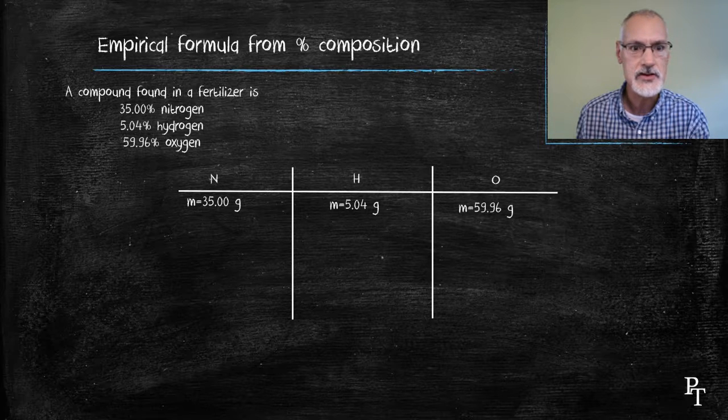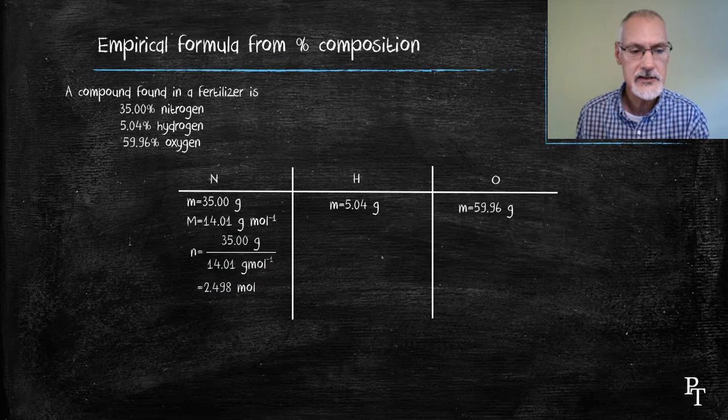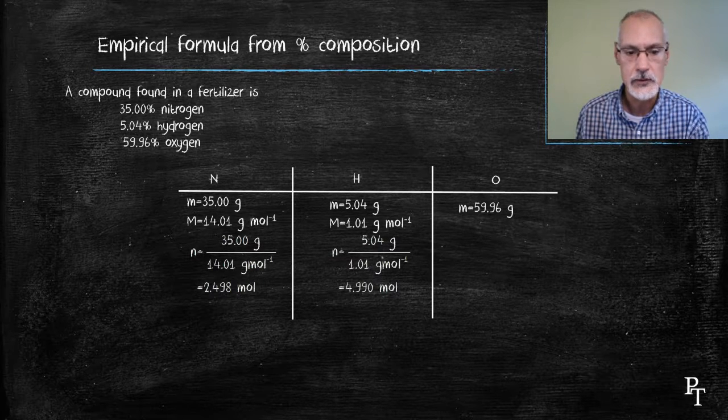I want to take that information that's in mass and convert it to moles. So I'm beginning with the molar mass of nitrogen. I perform the calculation that the number of moles is the mass over the molar mass and I get the 2.498 moles. Similarly, I do the same for hydrogen using hydrogen's molar mass and oxygen's molar mass.